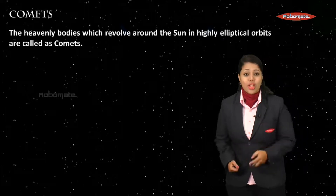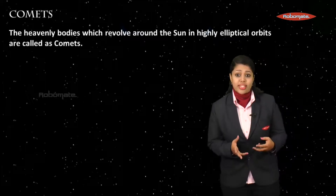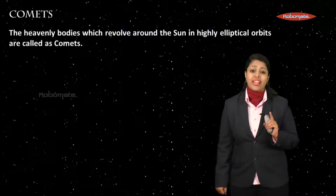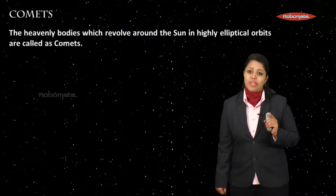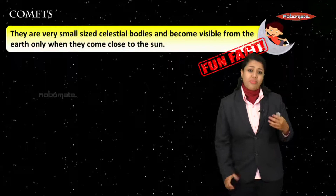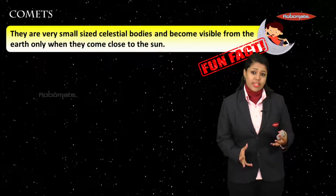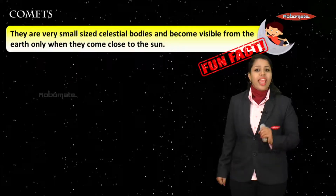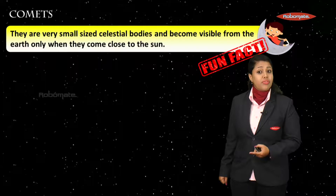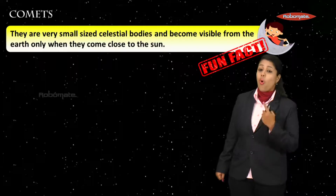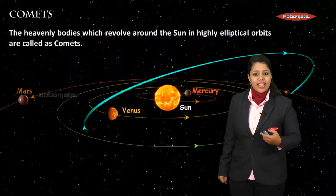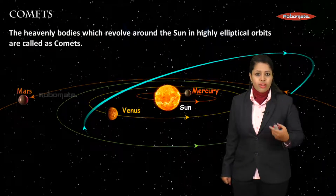Let's understand the next member of our solar system — comets. Comets are heavenly bodies that revolve around the Sun in a highly elliptical orbit. They are very small celestial bodies and become visible from Earth only when they come very close to the Sun.